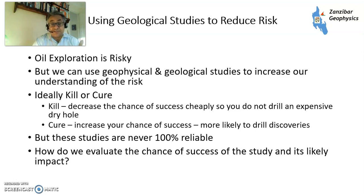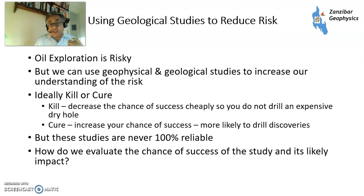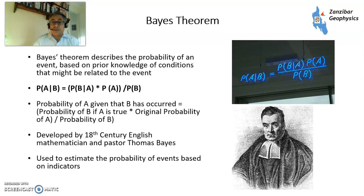What we want to do is kill or cure. Ideally we'd want to have a cheap way of finding out whether something's going to work or not, but these studies are never 100% reliable. So we also want to evaluate what the chance of success of the study is and its impact. One of the ways we look at that is in terms of value of information exercises using Bayes theorem.